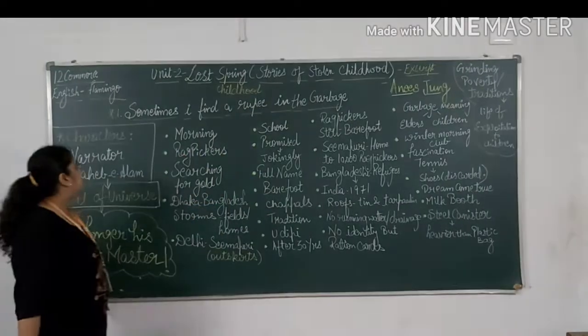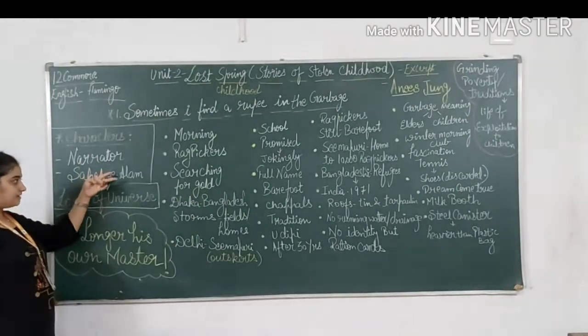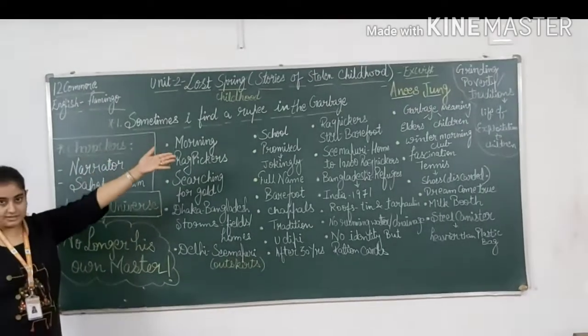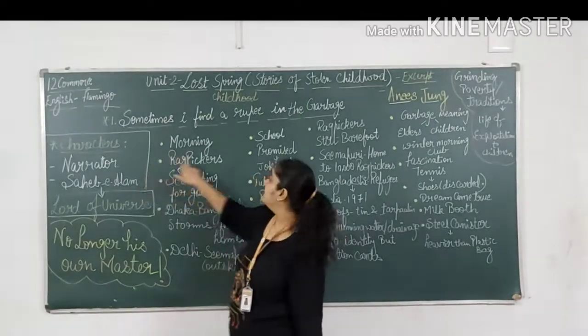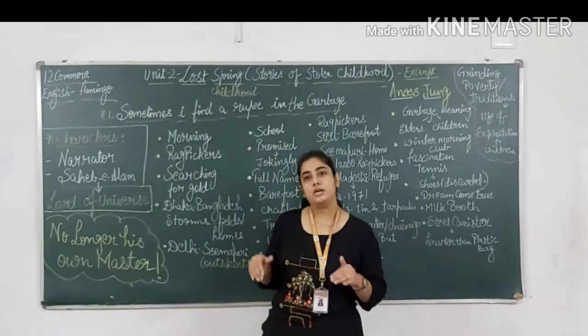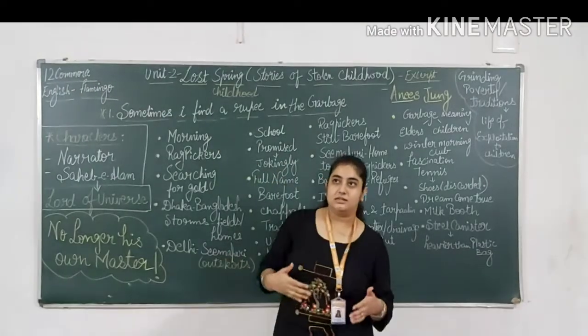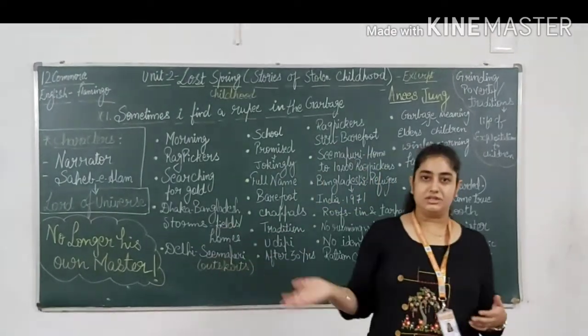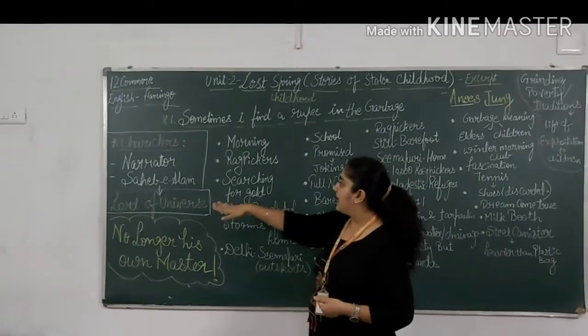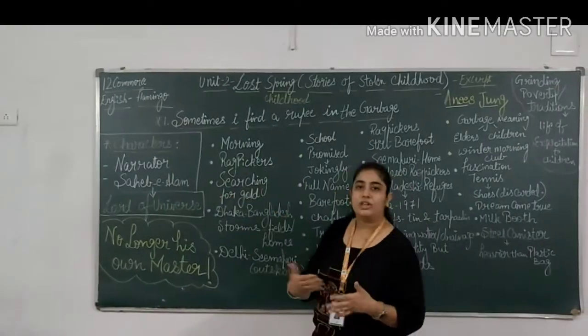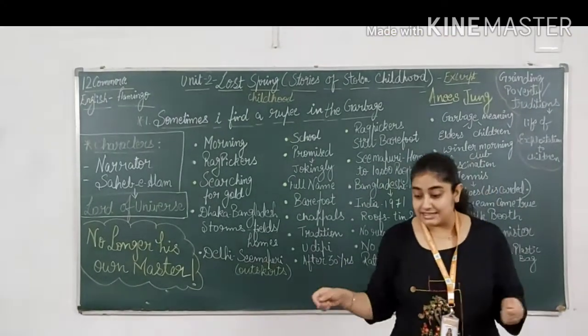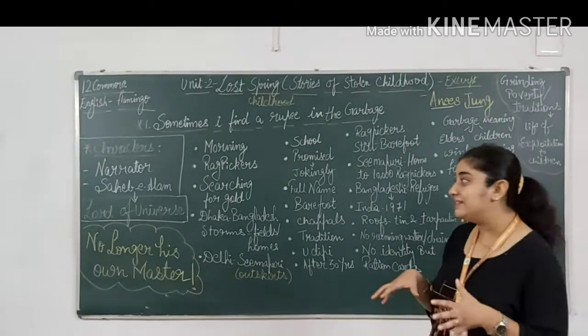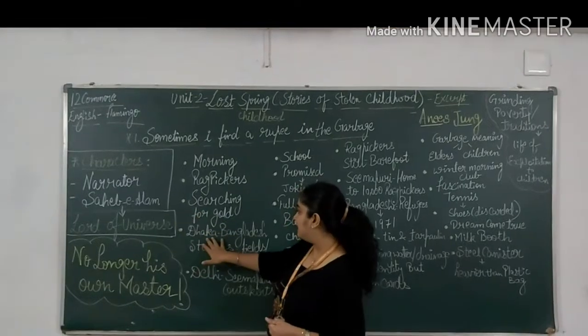So now we discuss about the two main characters. These are the only two main characters in the story. The one is the narrator, that is the author herself. And then is Saheb-e-Alam. Saheb-e-Alam is the child, is the rag picker - that means Koolah Uthani Wala, the one we will be discussing, the protagonist of the story. So Saheb is basically from Dhaka, Bangladesh.